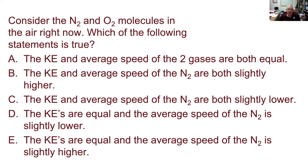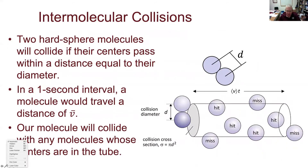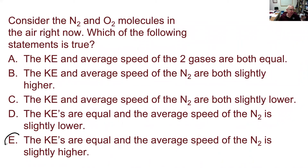The speeds, on the other hand, will not quite be the same, because nitrogen and oxygen have slightly different masses — molar mass is 28 for nitrogen and 32 for oxygen. In order to have the same kinetic energy, the nitrogen molecules have to be going slightly faster. The average speed depends on the square root of T over M, so the average speed of nitrogen is a little bit higher. That means I'm going for answer E.